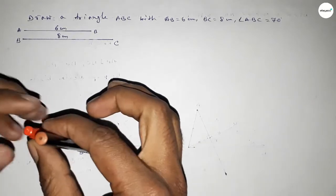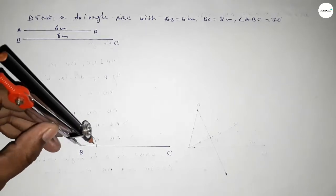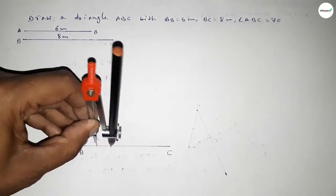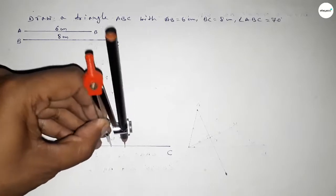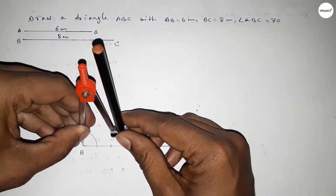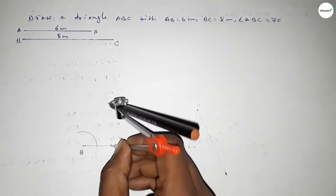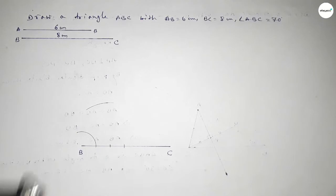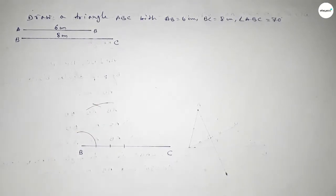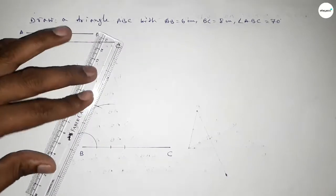Putting the compass on point B and taking any length, drawing an arc. With the same length, putting the compass on that arc and cutting again; same length, putting the compass there and cutting again. Then taking the length from point B to that intersection point, putting the compass there and drawing another arc. With the same length, putting the compass on the next point and cutting, so both curves intersect at a point.